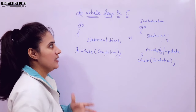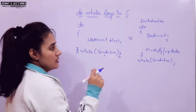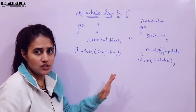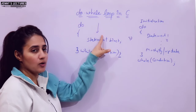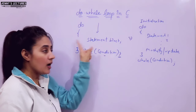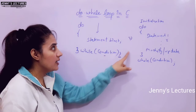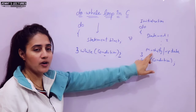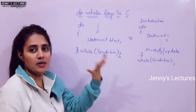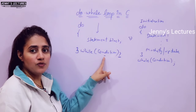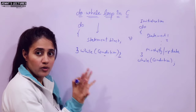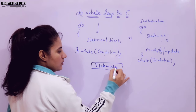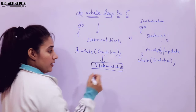That is the general syntax for writing a do-while loop. Now, what is the working? First, the statement block would be executed because we are not going to check any condition — without checking the condition, control will enter into this block. Whatever statements you write here would be executed. After that, condition would be checked. If the condition is true, again it will enter the loop, the statement would be executed, and again the condition would be checked after doing some increment or decrement. If the condition is false, control will go out of the loop.